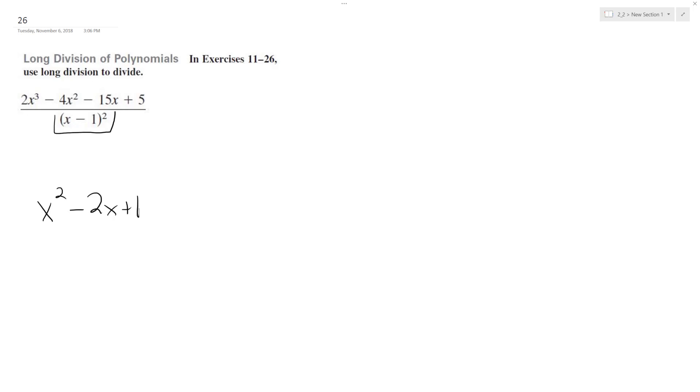And then what we're going to do here is we're dividing this whole thing, so 2x cubed minus 4x squared minus 15x plus 5.